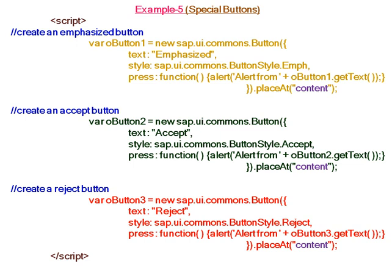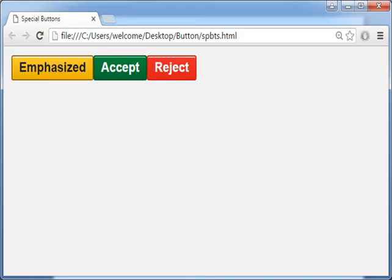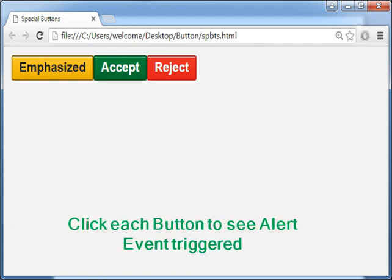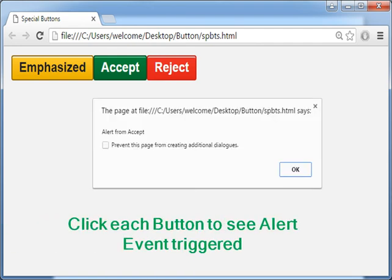Since the div element ID is 'content', Button 1, Button 2, and Button 3 can all be attached to the same div element with the same ID. Check the result in the browser to see the three special buttons — Emphasized, Accept, and Reject — getting created. Click each button to see the alert, confirming the event is triggered.